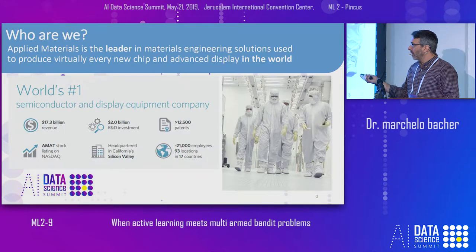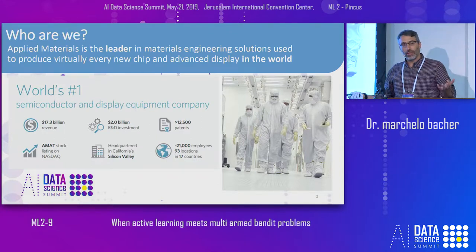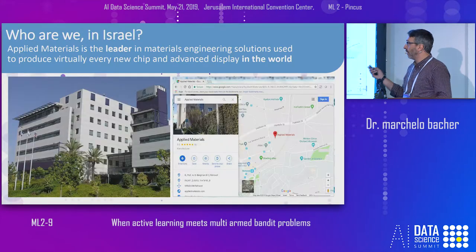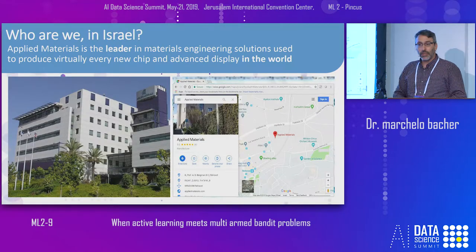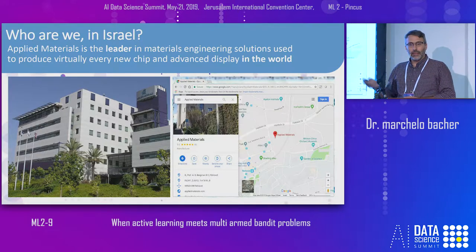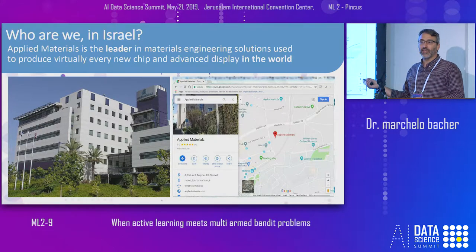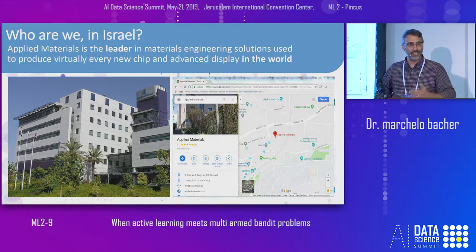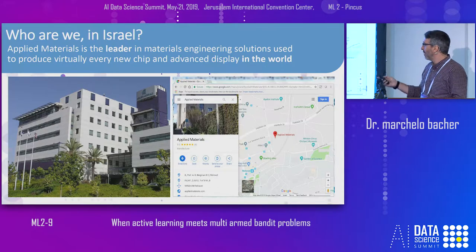Besides the headquarters in California, the second biggest place of research and development for innovation is located here in Rehovot, close to the train station and close to the Weizmann Institute. It's a nice building, so you might want to visit us — we'll be very happy.